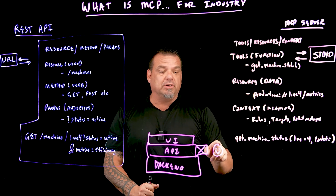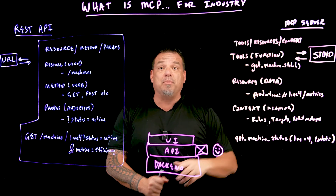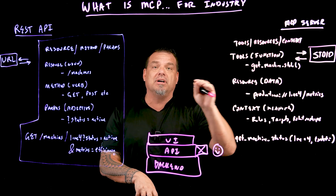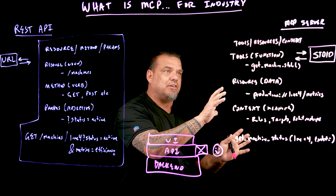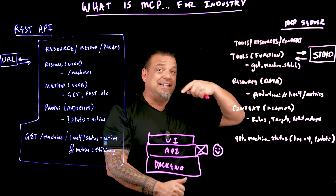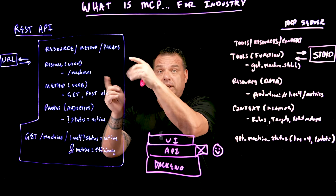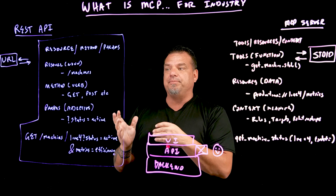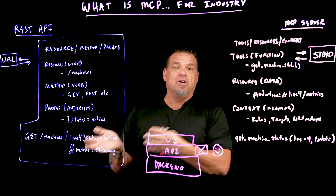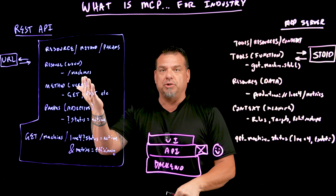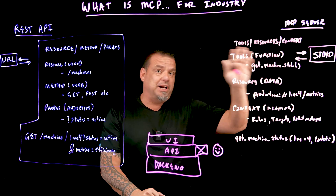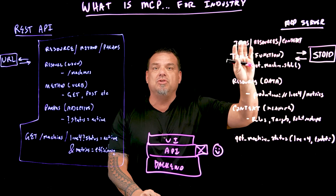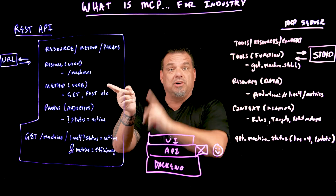MCP servers give us the ability to hook an agent into a server, and we can just ask the agent any question we want. Give me which line is performing the worst and why. The MCP server lets the agent figure out what tools are available and reason through all the steps we would normally have to write manually. Rather than spending $100,000 on an engineer to build one integration, you spend X to enable an MCP server into your infrastructure — and that applies to a hundred use cases instead of one.